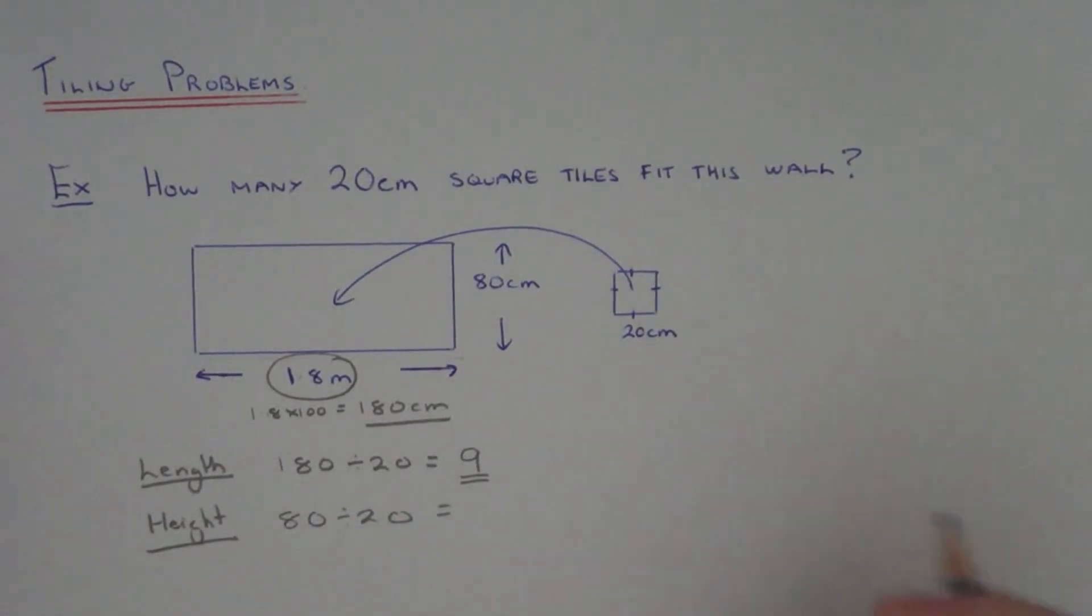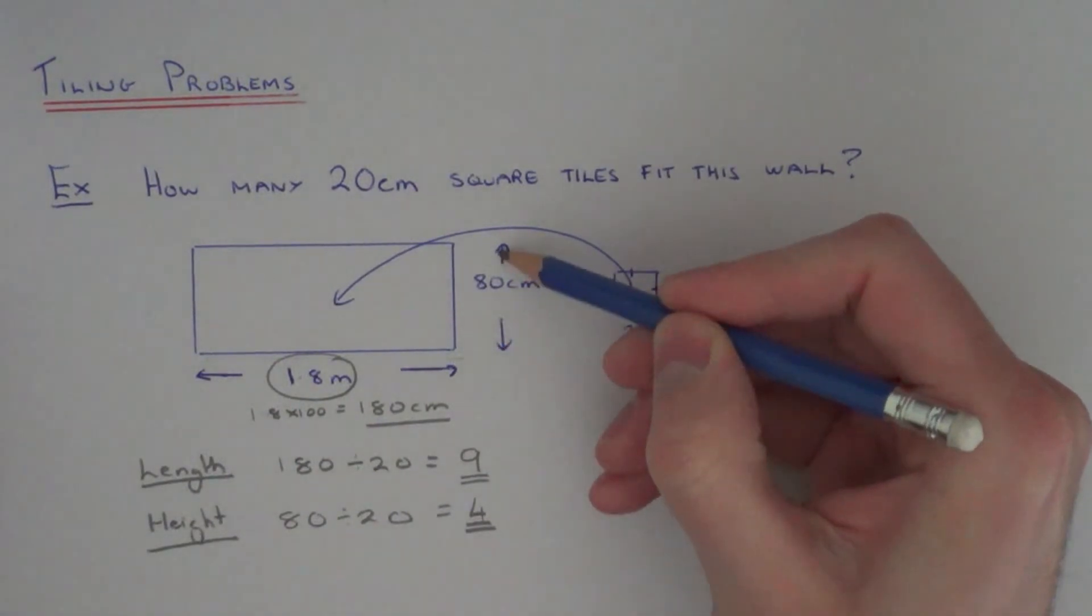So 80 divided by 20 is 20, 40, 60, 80. That's 4. Going up we can fit 4 tiles.